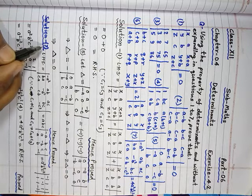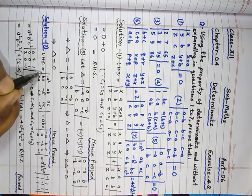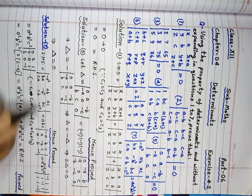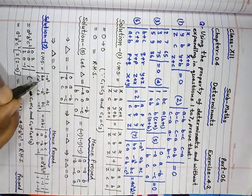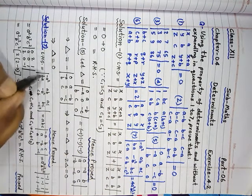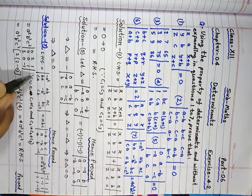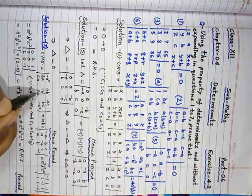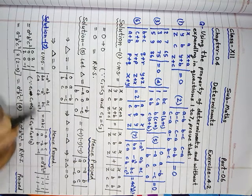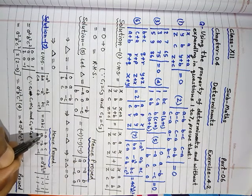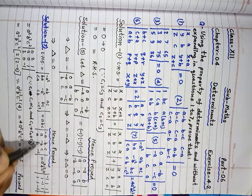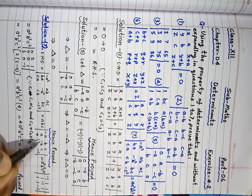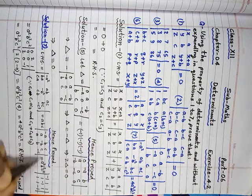And solution seventh. LHS is equal to this determinant. And you have to take common from first row, second row, third row, or you can say first column, second column, and third column, a, b, c. After taking common, minus a, b, c, a, minus b, c, a, b, minus c is remaining. And again, you can take a, b, c common.